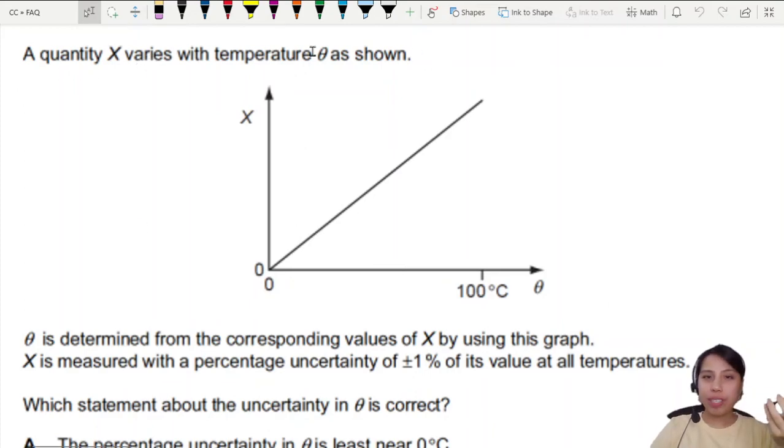A quantity x varies with temperature theta as shown. So we got x and from x you read you get a theta. So this is what we call a calibration curve. Theta is determined from x.